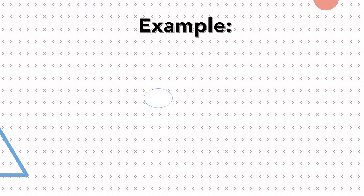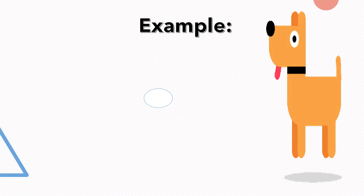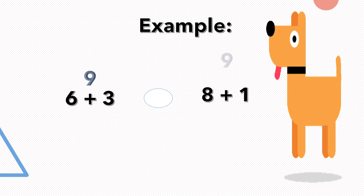Let's take a look at this example: the number sentences 6 plus 3 and 8 plus 1 — which is greater? We can easily solve this mentally. We know that 6 plus 3 is 9, and 8 plus 1 is 9. The equal sign is the correct sign to use, because both equations have the same value. 6 plus 3 gives a sum of 9, and 8 plus 1 gives a sum of 9 — therefore, they are equal.